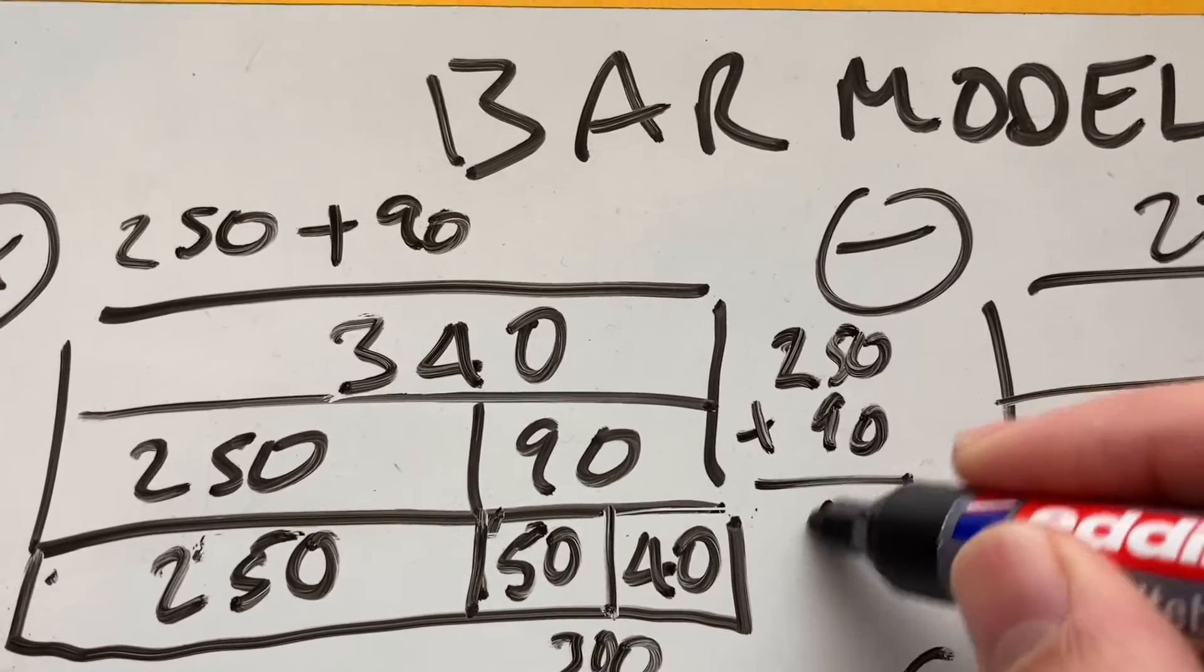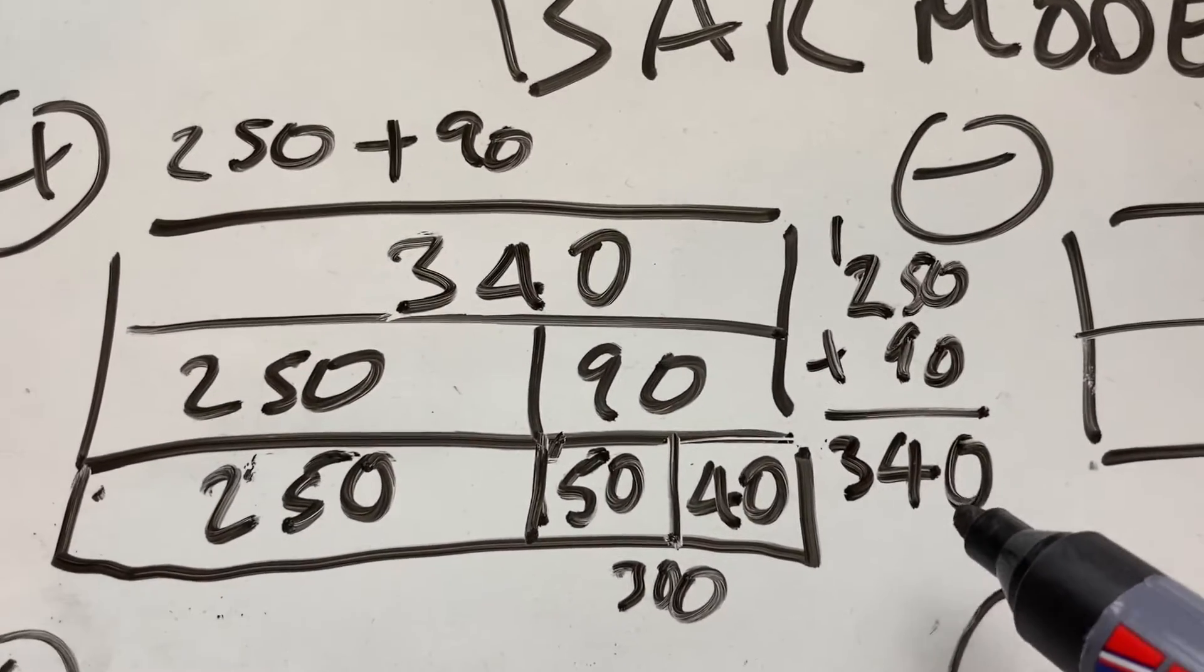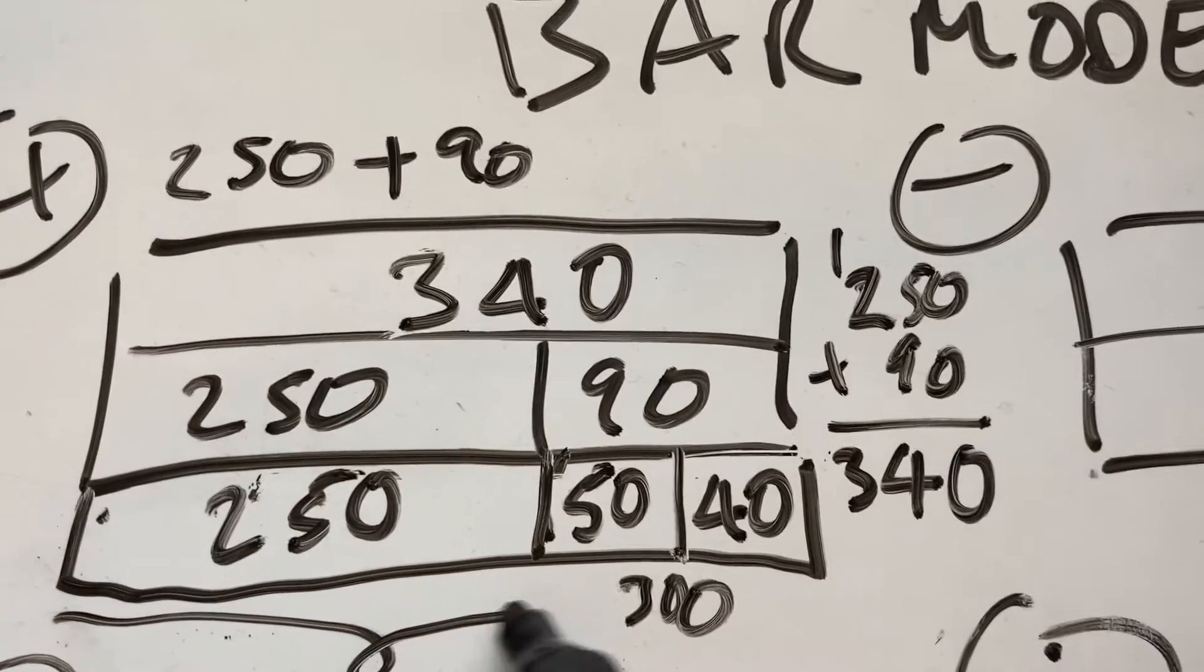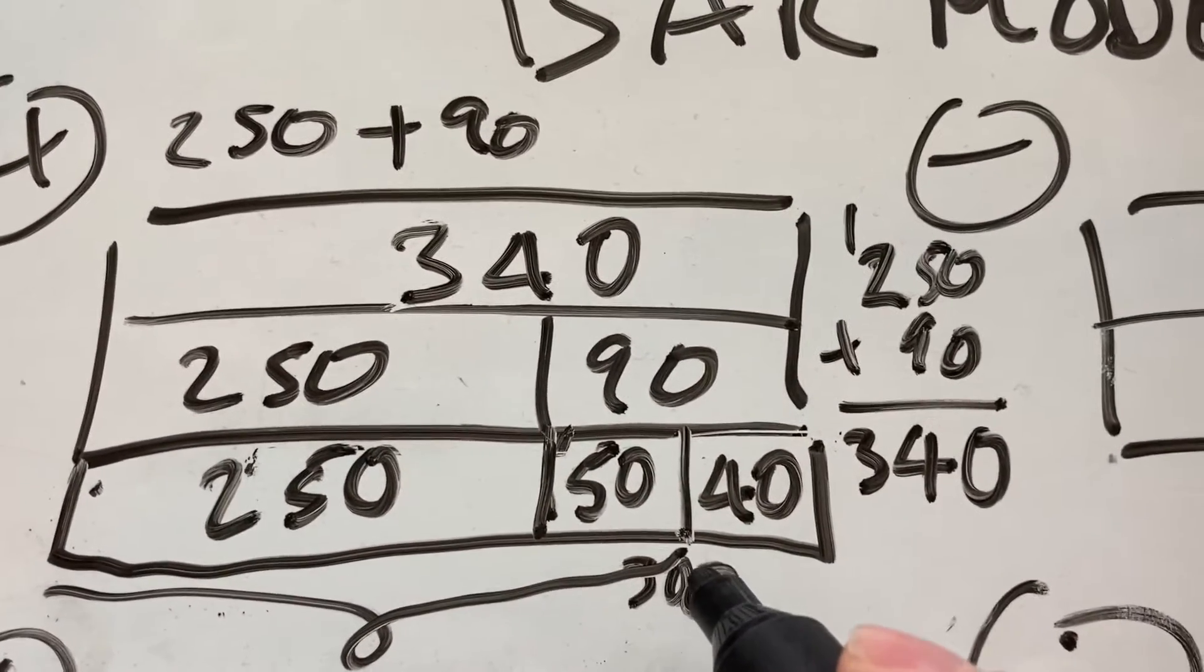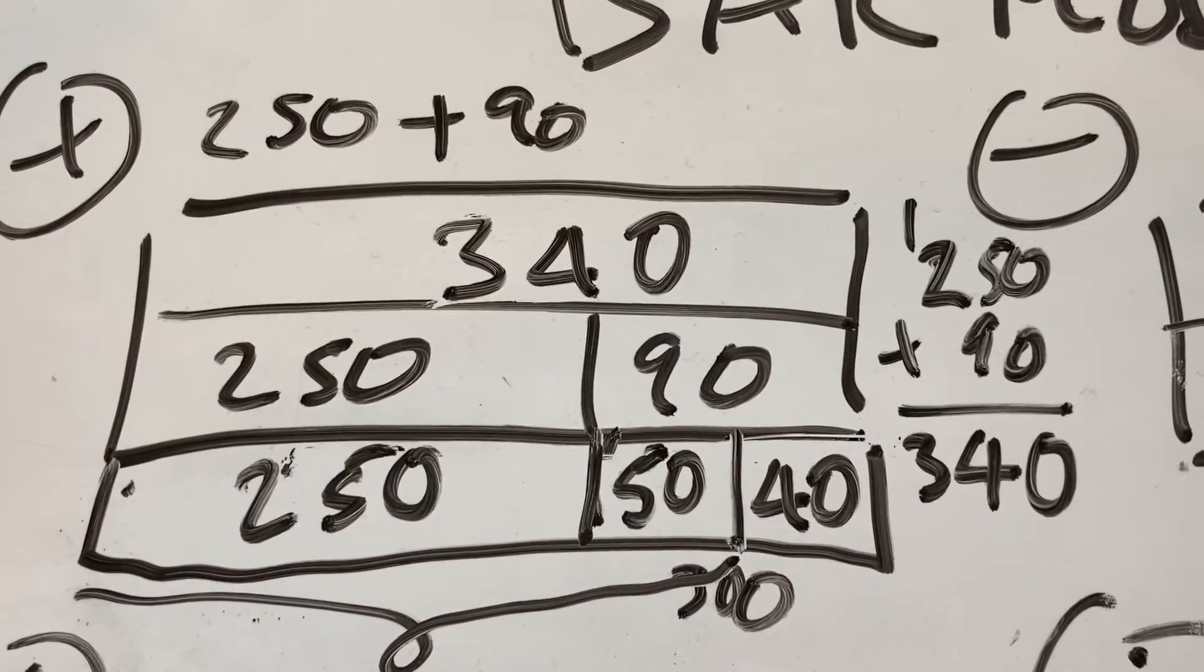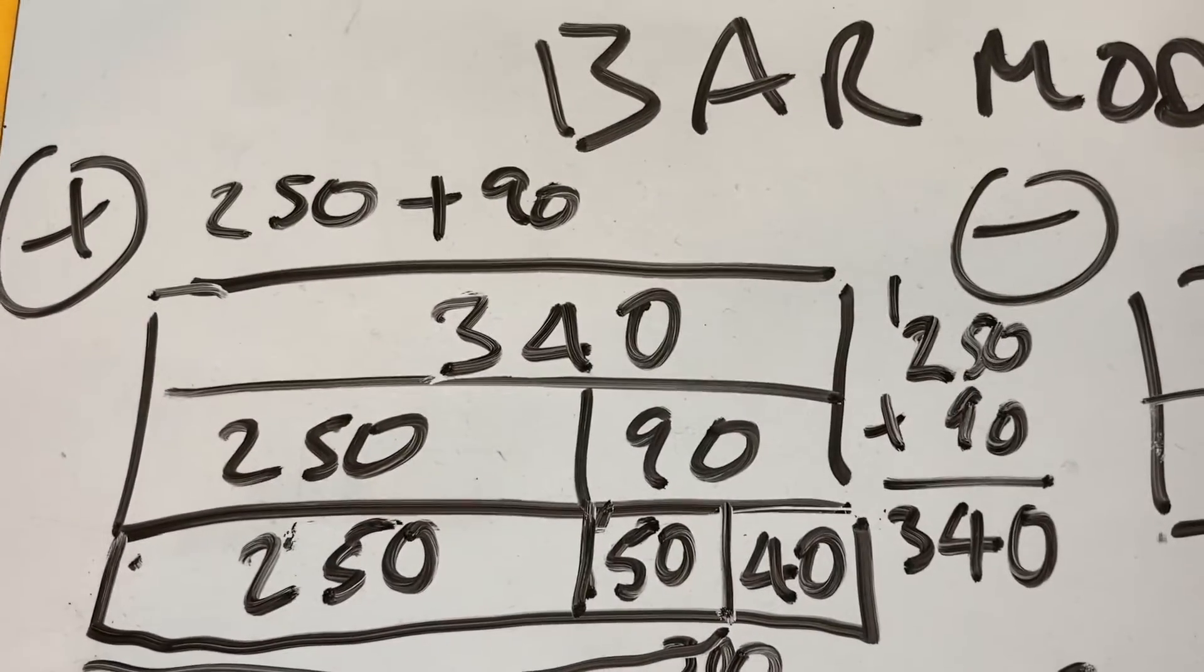So I'm happy to get 340. And I can compare it to column addition: 0 and 0, 5 and 9 is 4, carry that 1, I get 340. So I know that that answer is 340. I know that's correct. But I like to use this idea of chunking to a big round number, 300 in this case. Break that number down. And you could use a number line as well for that. So that's a nice bar model representation of addition.